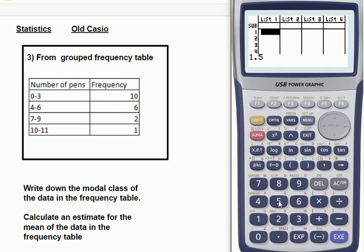So the rest of the midpoints are pretty easy, actually. So 4 and 6, that would be 5 halfway between them. 8 is halfway between 7 and 9, and 10.5 is halfway between 10 and 11.